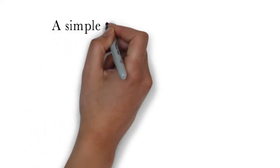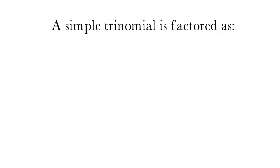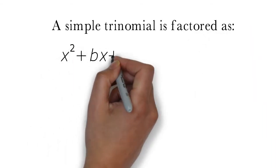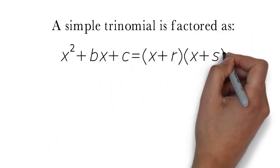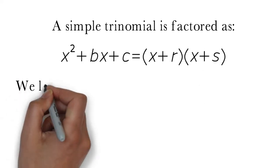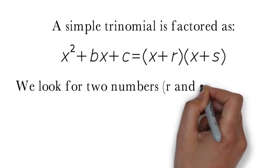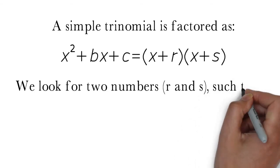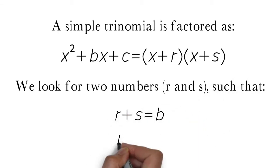A simple trinomial is factored by writing it as a product of two binomials of the form x plus r multiplied by x plus s. To do this we look for two numbers, r and s, such that r plus s equals b and r times s equals c.